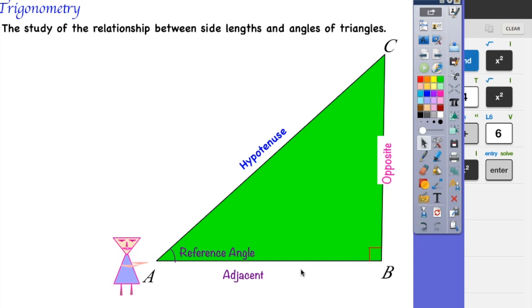Okay, so adjacent, opposite, and hypotenuse. That is how we're going to refer to all the side lengths of our right triangles.